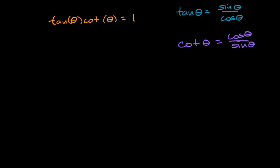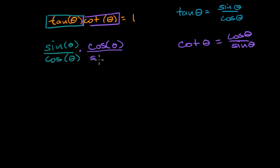So if we just rewrite the left-hand side of this expression, we can rewrite tangent of theta as sine of theta over cosine of theta, and then we can rewrite cotangent of theta as cosine of theta over sine of theta.